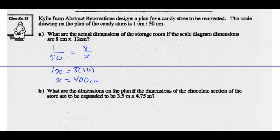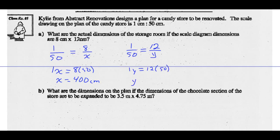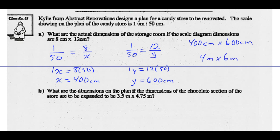For the 12-centimeter dimension, using the same scale factor of 1 to 50: 1 over 50 equals 12 over y. Cross-multiplying, y equals 12 times 50, which is 600 centimeters. So the actual dimensions are 400 centimeters by 600 centimeters, or 4 meters by 6 meters.